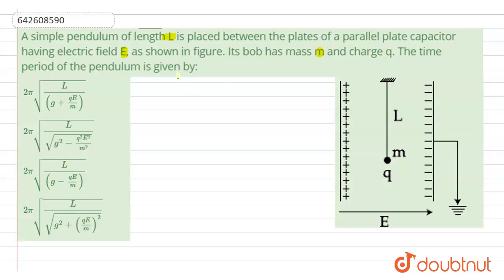So in this question I have to find out the time period. Now we know, time period for a simple pendulum, if in case of air, time period is 2π√(L/g).